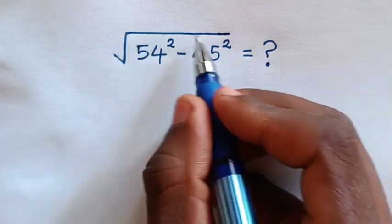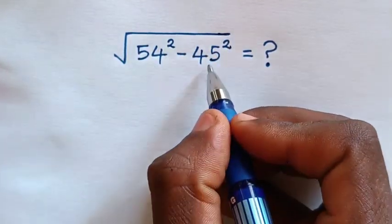Hello, how to solve square root of 54 squared minus 45 squared?